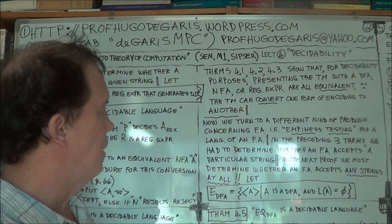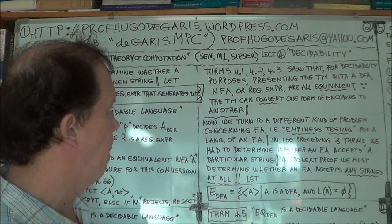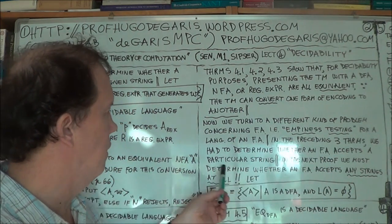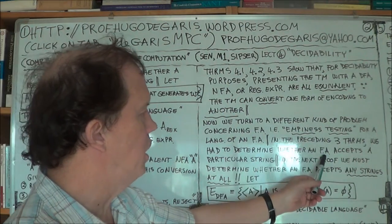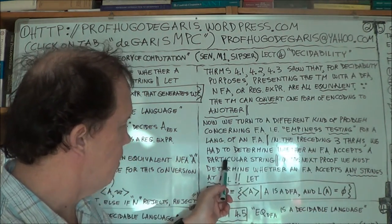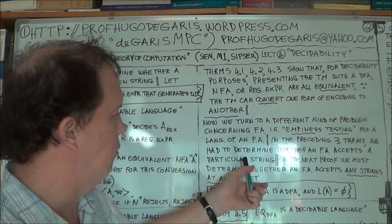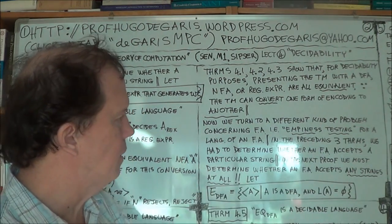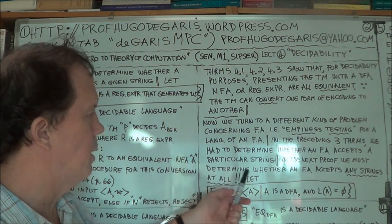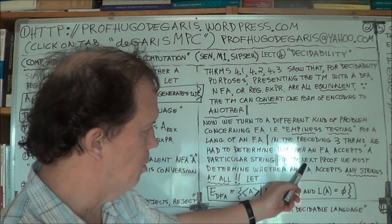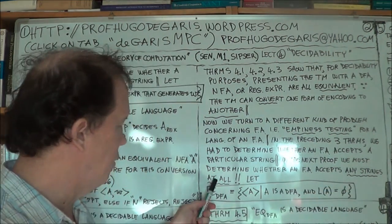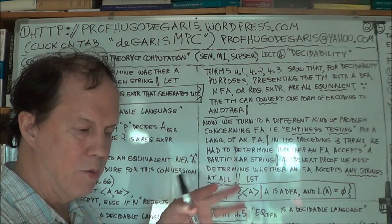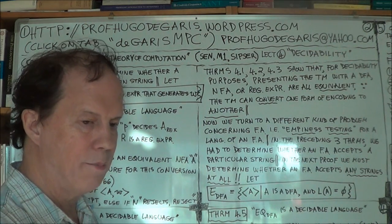In the previous three theorems, we were asking whether a particular machine or regular expression accepts a particular, random string. Now in this case, we're trying to see whether a machine — a finite automaton — accepts any strings at all. We're testing that. Equivalently, you're testing: does it accept no strings?